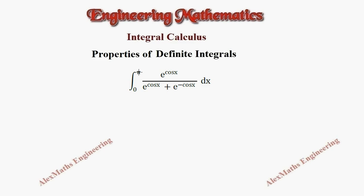So here the given question is integral 0 to pi, e power cos x by e power cos x plus e power minus cos x dx. Let's take this as I equal to.